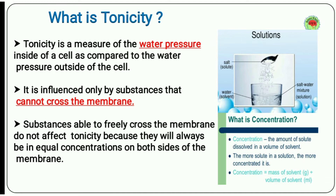Solute is a substance that cannot cross the membrane, and tonicity depends on it. Substances able to freely cross the membrane do not affect tonicity, like water. Water can freely move in and out of the cell, so tonicity does not depend on it, because water will always be in equal concentration on both sides of the membrane.